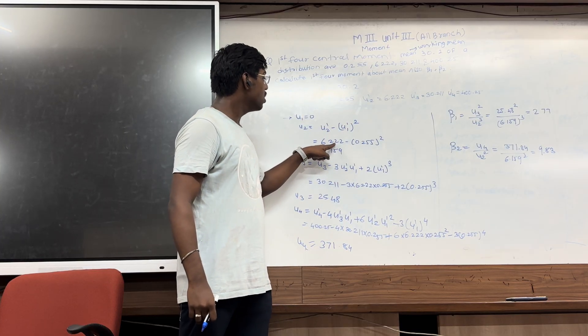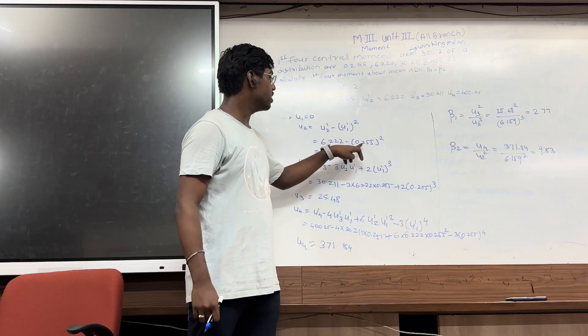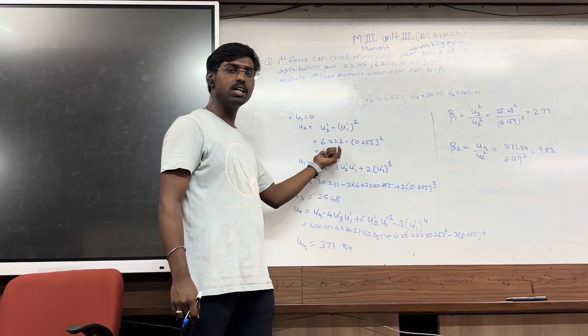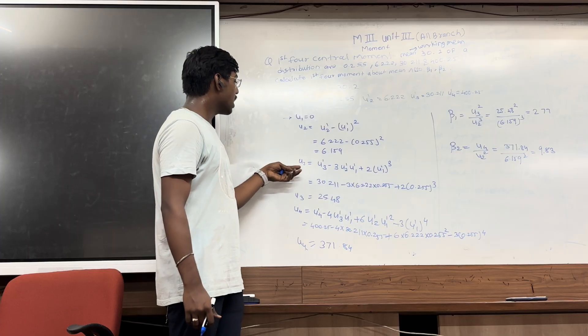So mu2 dash is 6.22 and minus 0.255 mu1 dash bracket square. The answer will be 6.25. Also calculate mu3.